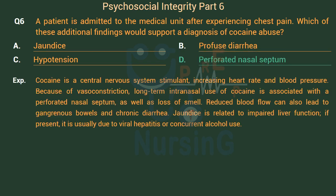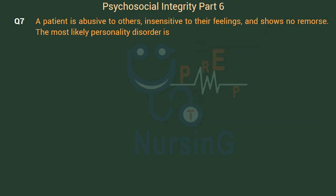Cocaine is a central nervous system stimulant, increasing heart rate and blood pressure. Because of vasoconstriction, long-term intranasal use of cocaine is associated with a perforated nasal septum, as well as loss of smell. Reduced blood flow can also lead to gangrenous bowels and chronic diarrhea. Jaundice is related to impaired liver function; if present, it is usually due to viral hepatitis or concurrent alcohol use.